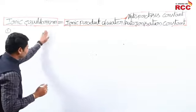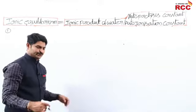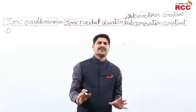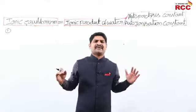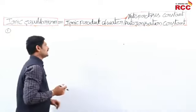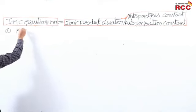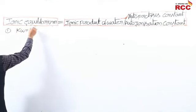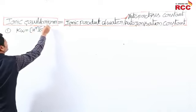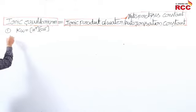I will explain point-wise, neatly. These same points come in the final NEET exam — whether theoretical questions, numericals, concepts or formulas. First point: the formula of the ionic product of water is Kw = [H⁺][OH⁻].